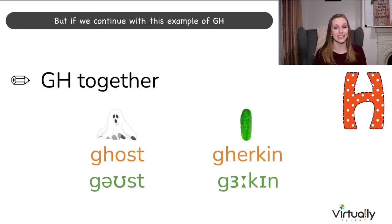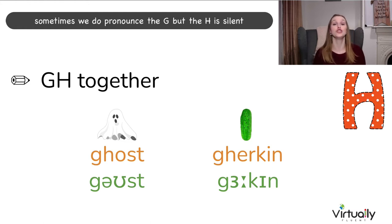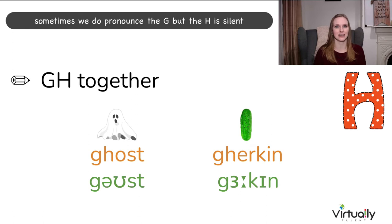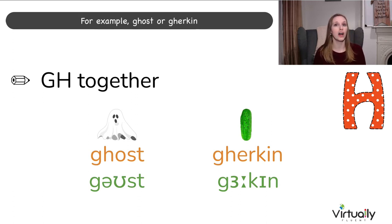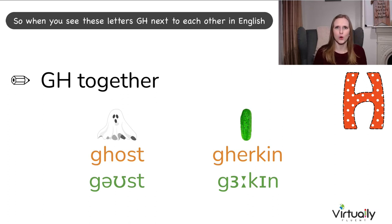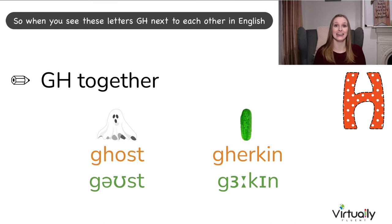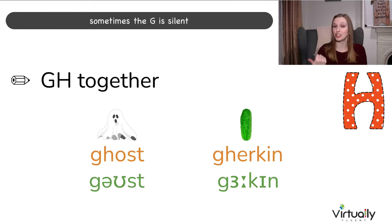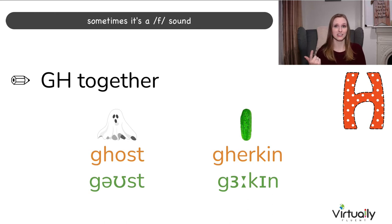If we continue with GH: sometimes we do pronounce the G, but the H is silent. For example: ghost or gherkin. So when you see GH next to each other in English, sometimes the G is silent, sometimes it's an F sound, and sometimes the H is silent.